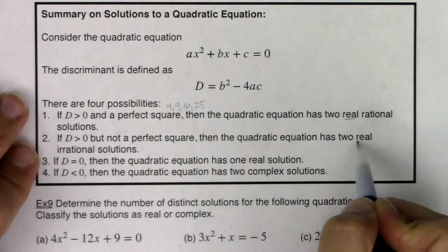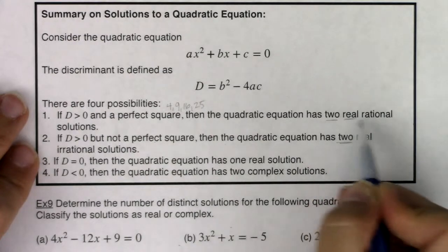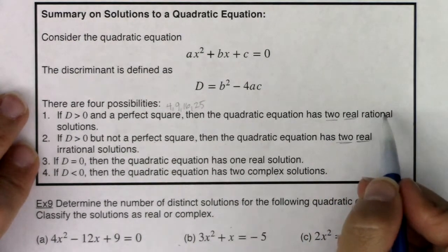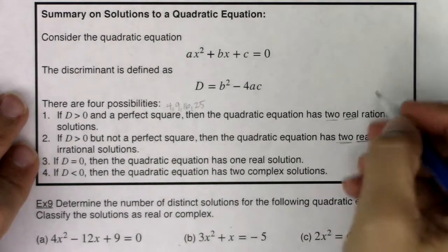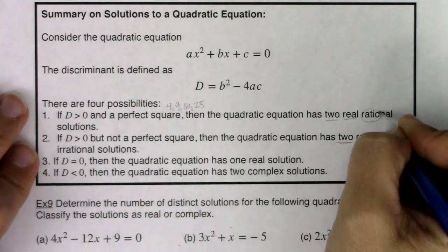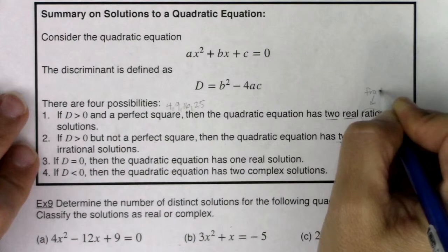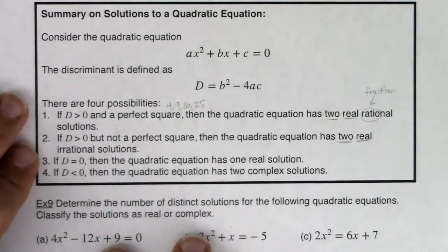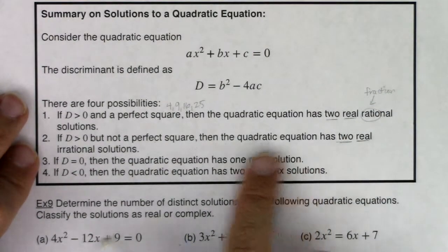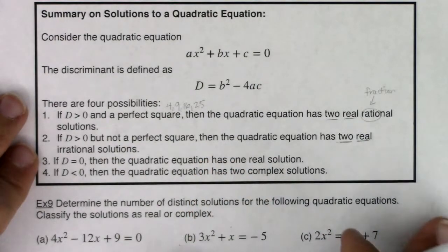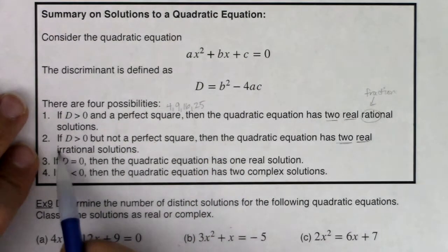The key piece is that they have two real solutions. Some are rational, and rational has that word ratio in it, so I can write the solution as a fraction. When they're irrational, it means I can't write them as a fraction - not rational, some kind of unrepeating decimal.